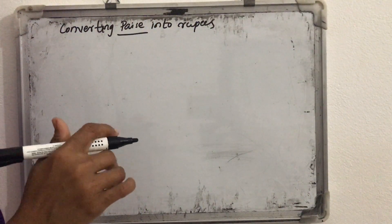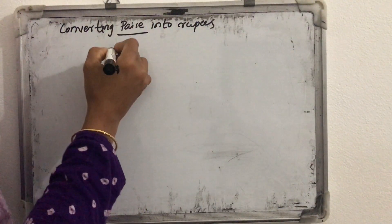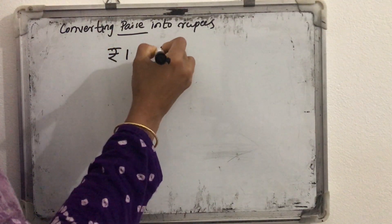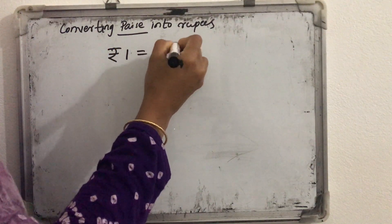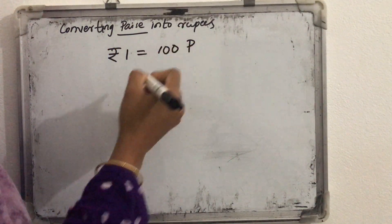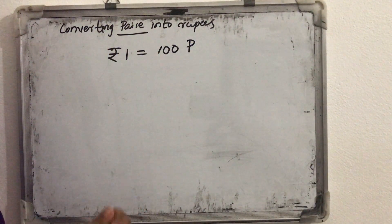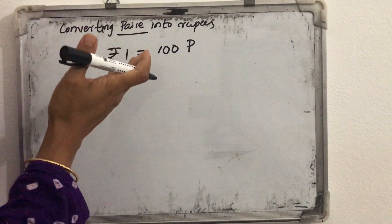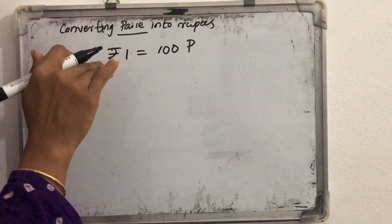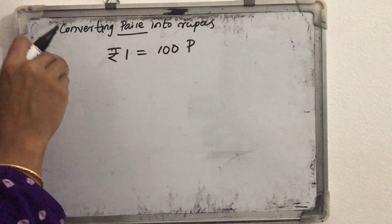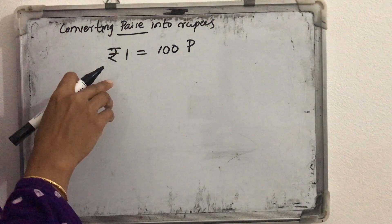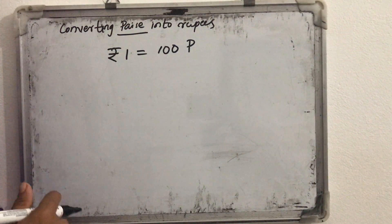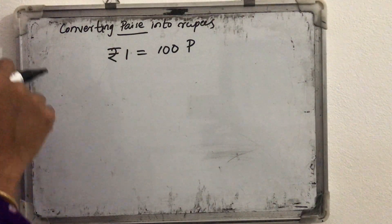We know 1 rupee is equal to how much paise? 1 rupee equals 100 paise. So to convert paise into rupees we are dividing that paise by 100. That is the method.